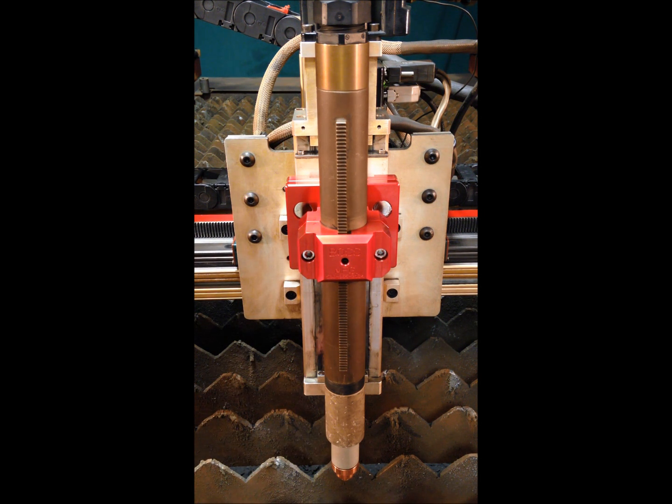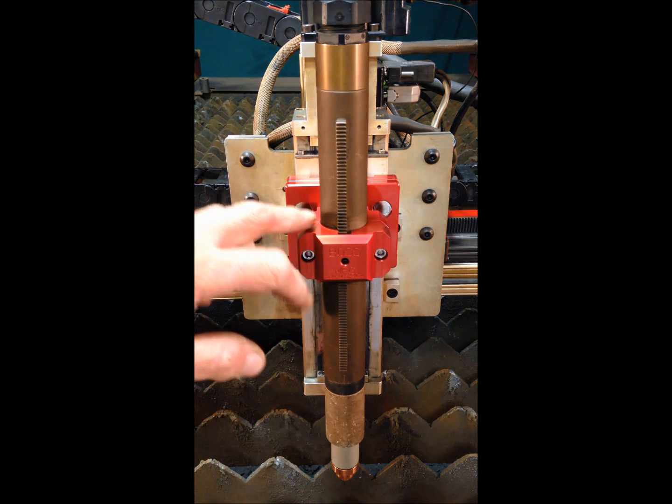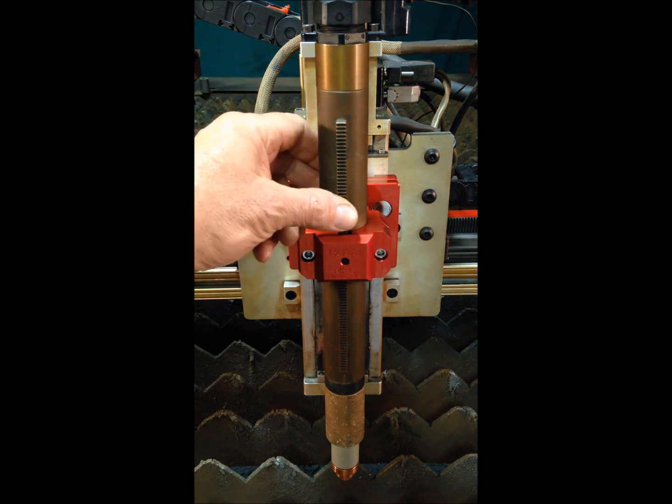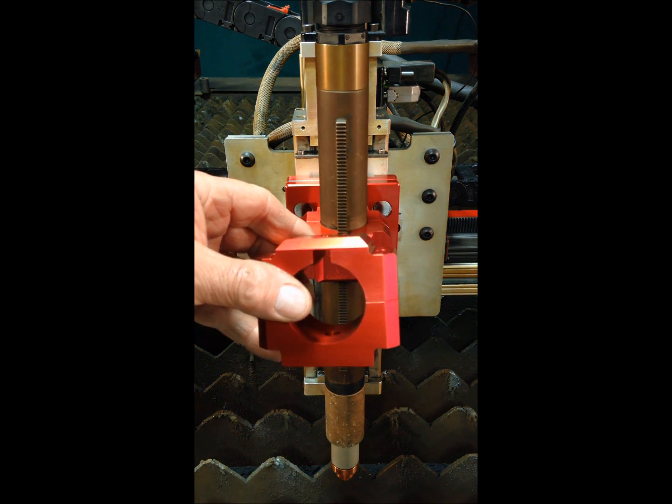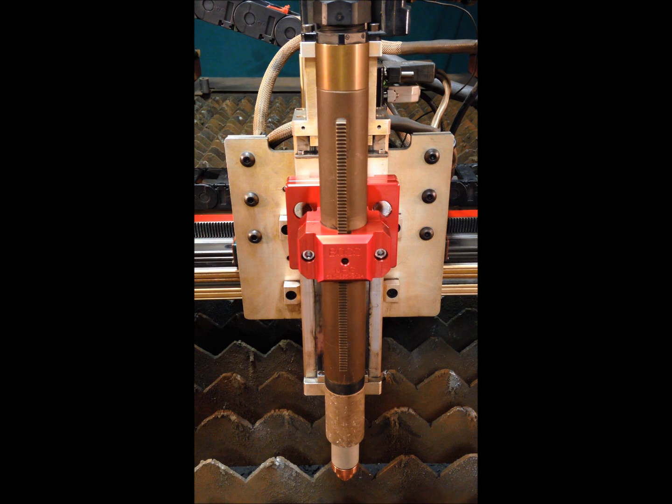We offer magnetic breakaway plasma torch holders with both the industry standard 1 3/8-inch bore. We also offer a 1 3/4-inch bore for the new Hypertherm Series 125 machine torch, as well as a 2-inch bore for high-definition plasma torches.